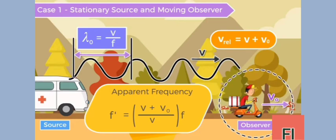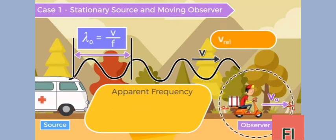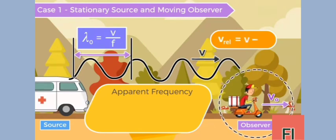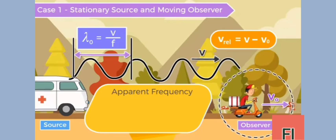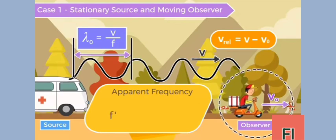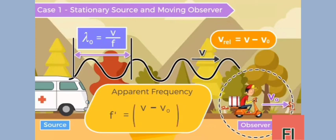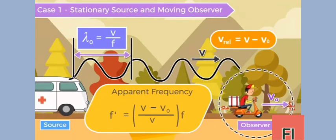Similarly, if the observer is moving away from the source with velocity v₀, then the relative velocity of sound will be equal to v − v₀, and the apparent frequency heard by the observer f' is equal to f × (v − v₀) / v.